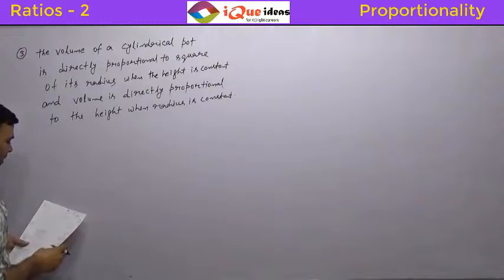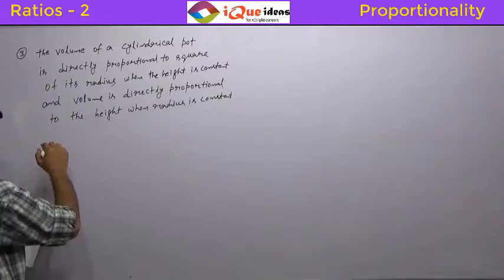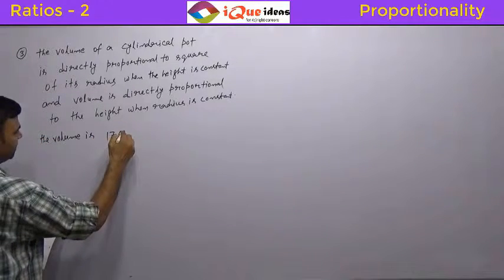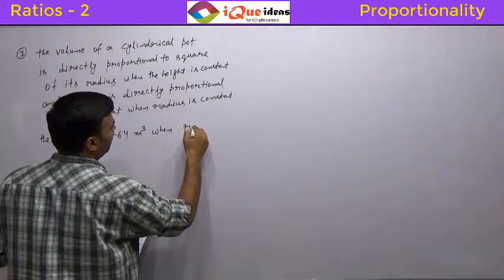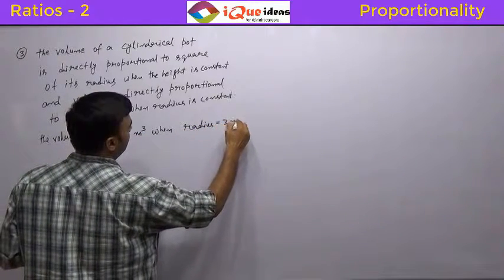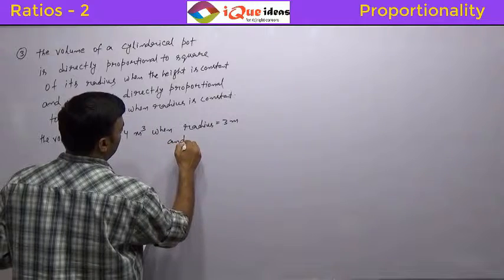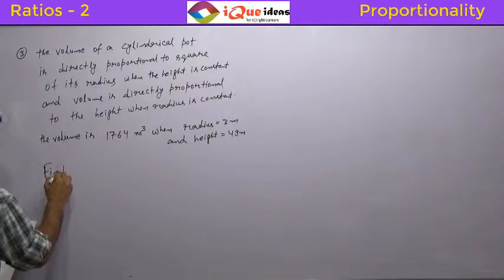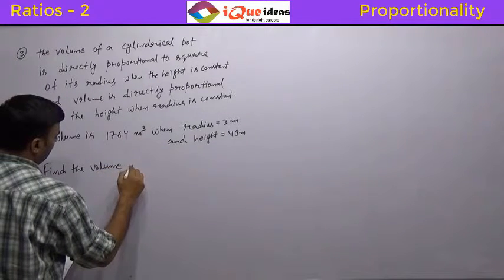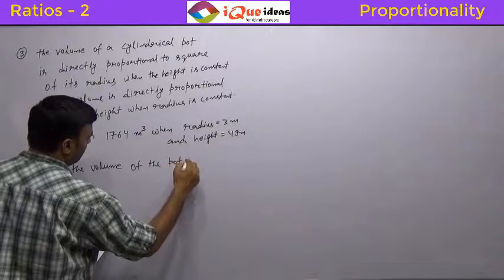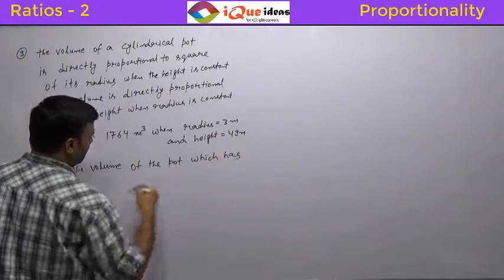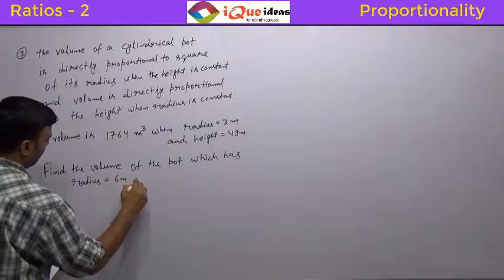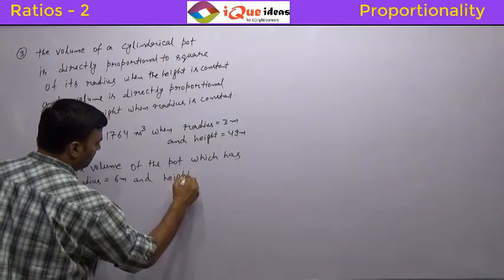Now again there are two situations given. One situation is given as the volume is 1764 meter cube when radius is 3 meters and height is 49 meters. Find the volume of the pot which has radius equal to 6 meters and height equal to 7 meters.